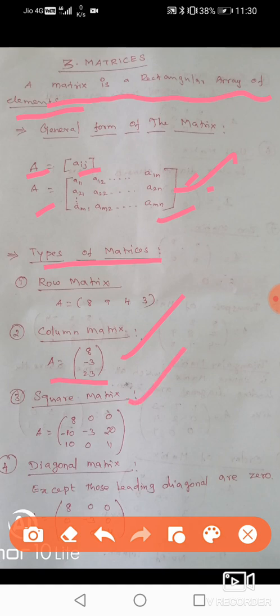Square matrix. What is a square matrix? A square matrix is one where the number of rows equals the number of columns, i.e., M cross N where M = N.